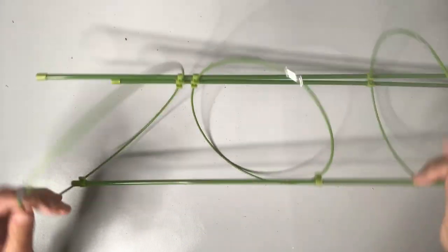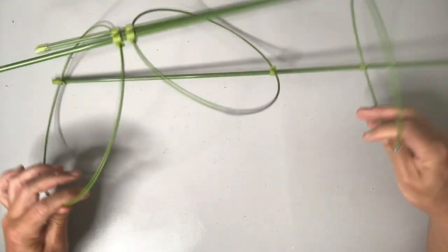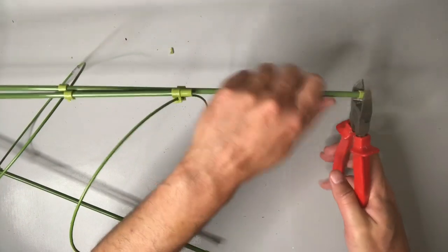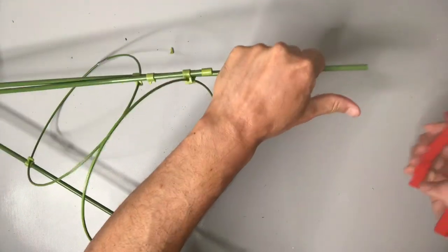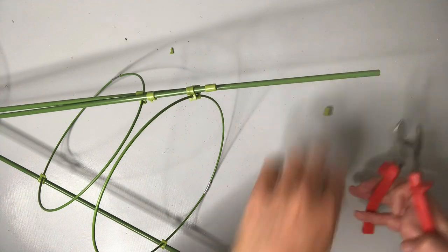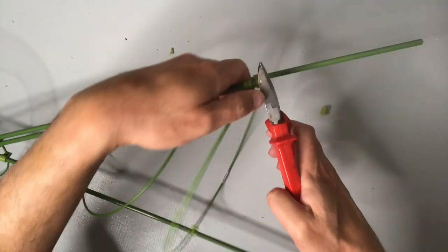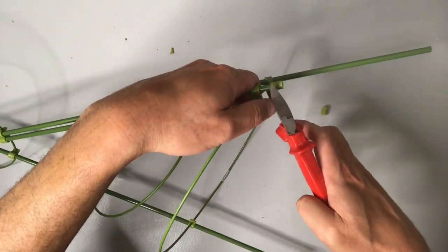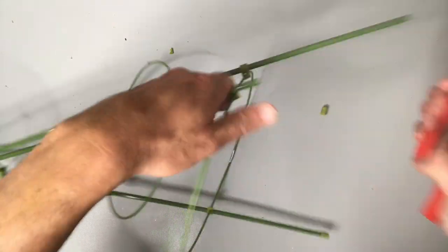This is a tomato cage that I got from Dollar Tree a couple of months ago. I bought it because I loved these wire circles that are part of it and I thought they'd actually make a really nice wreath or wall hanging, so this is my opportunity to do just that.